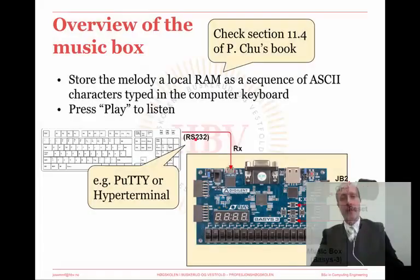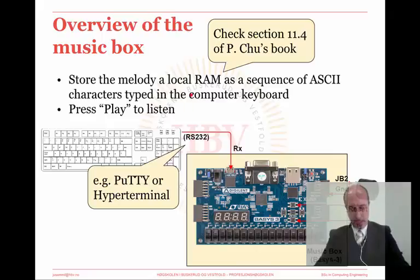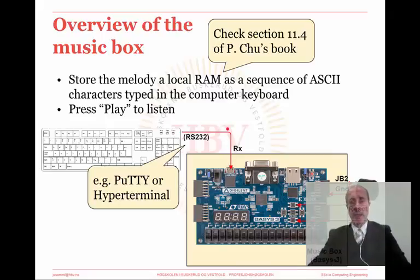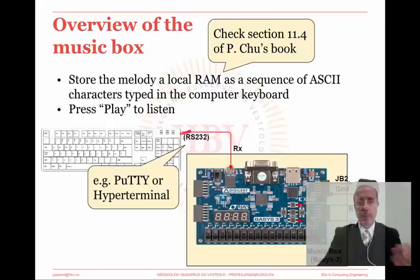Here is an overview of what you are being asked to develop in this assignment. Notice that you will need a buzzer to generate the musical notes. Once the sequence of ASCII codes received through the serial port have been stored in the FPGA memory, you will just have to press the play button to listen to the melody. The cable for the RS-232 communication is the same as for powering up the board and for programming the FPGA. For the terminal emulator application to send the ASCII codes, you can use the trial version of Hyperterminal or PuTTY, which is entirely free.